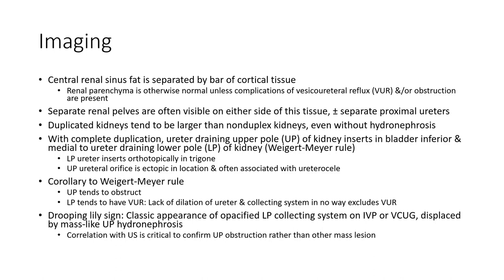With complete duplication, the upper pole ureter orifice is ectopic in location and often associated with a ureterocele. Corollary to the Weigert-Meyer rule: the upper pole moiety tends to obstruct, and the lower pole tends to have vesicoureteral reflux. Lack of dilatation of the ureter and collecting system in no way excludes a ureterocele. The classic 'drooping lily' sign: the opacified lower pole collecting system on IVP or VCUG is displaced by a mass-like upper pole hydronephrotic process. Correlation with ultrasound is critical to confirm upper pole obstruction rather than another mass lesion.